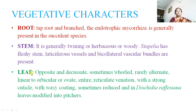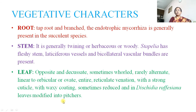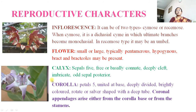Leaves are generally opposite and decussate, sometimes whorled, rarely alternate. Shape is linear to orbicular or ovate, with entire margin, reticulate venation with strong cuticle and waxy coating. Sometimes leaves are reduced or modified to scale-like structures — example Dystedia rafesiana.